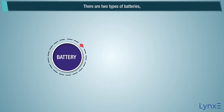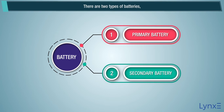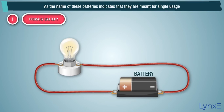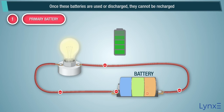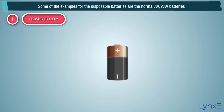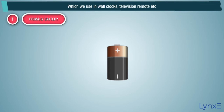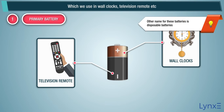Types of battery. There are two types of batteries: primary batteries and secondary batteries. Primary batteries, as the name indicates, are meant for single usage. Once these batteries are used or discharged, they cannot be recharged. Some examples of disposable batteries are the normal AA and AAA batteries, which we use in wall clocks, television remotes, etc. Another name for these batteries is disposable batteries.